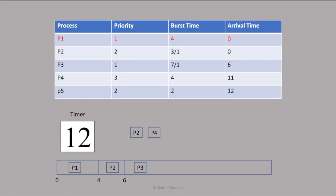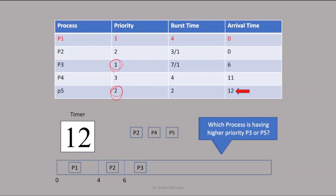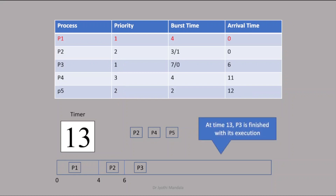One more second executes. At the 12th second, a new process P5 arrives and is added to the ready queue. P5's priority and P3's current priority need to be checked. P3 obviously has the highest priority with rank 1, so we can continue with P3. P3 requires one more second, and at the 13th second P3 has completed its execution.